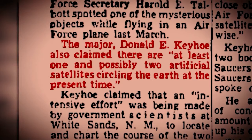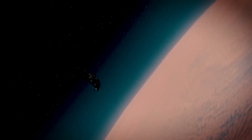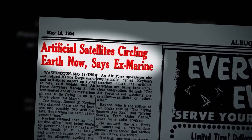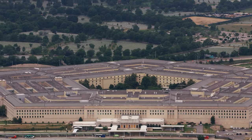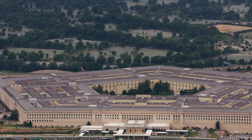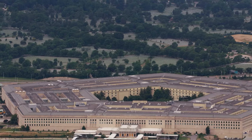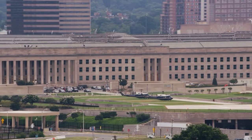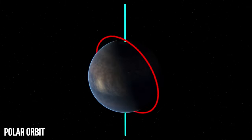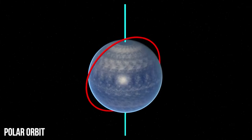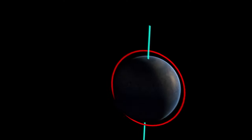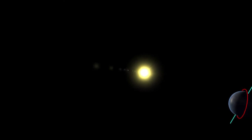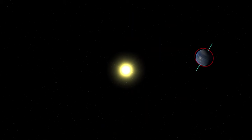By 1960, the story had evolved from speculative newspaper articles to a matter of national security interest. The Pentagon, responding to reports from tracking stations of an unidentified object in polar orbit, acknowledged its existence but could not provide an explanation for its origins or purpose. Polar orbit was significant because it suggested a level of technological sophistication not yet achieved by human-made satellites at that time. The object's ability to orbit over every part of the Earth added to the mystery.